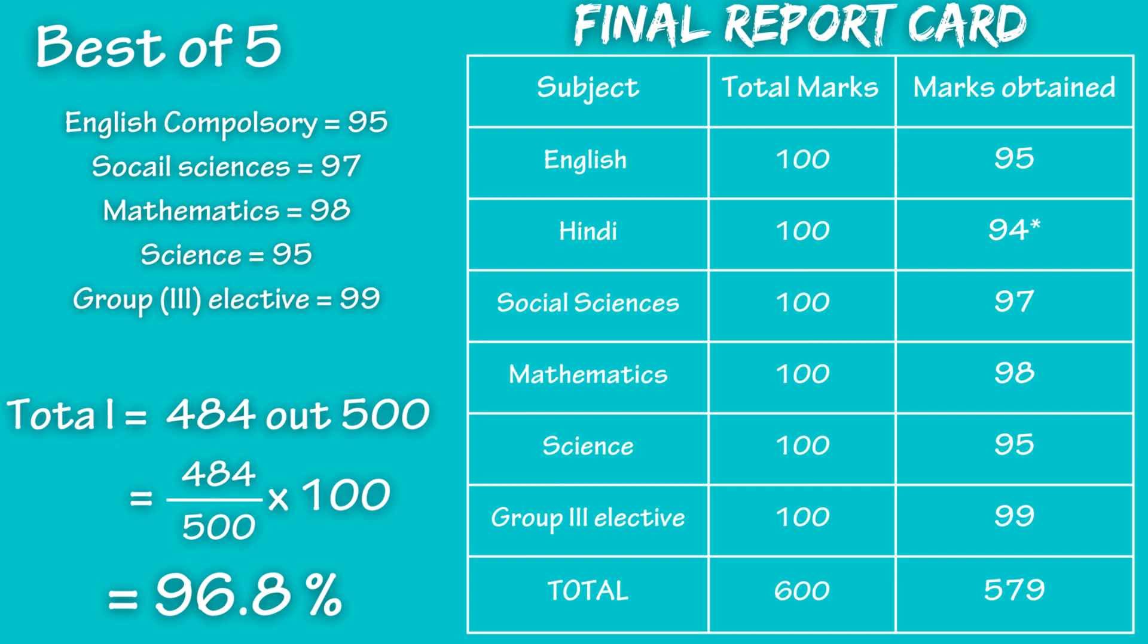College admission is on this score that is 484. If cutoff list of the college is 484 or less than 484 then you are definitely in your college of your choice. If you want to calculate your percentage then you have to use this formula. Marks obtained upon total marks multiplied by 100 as in this case 484 upon 500 multiply by 100. So this student hypothetical student have scored 96.8 percent. I pray to God that you all score more than this.